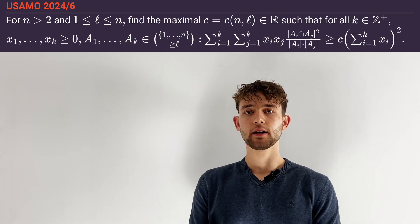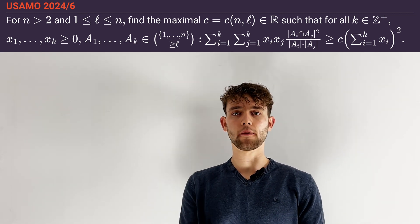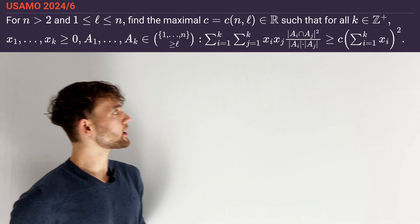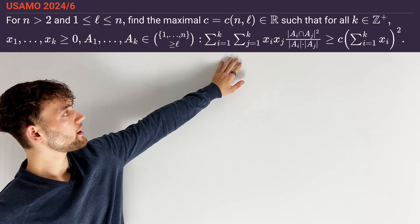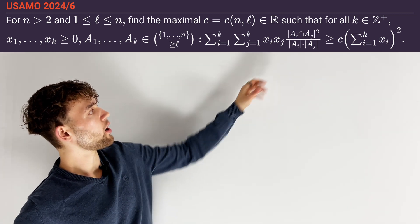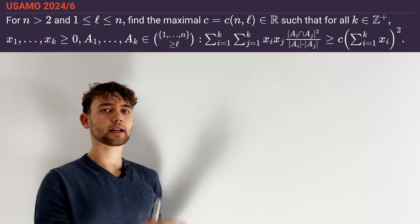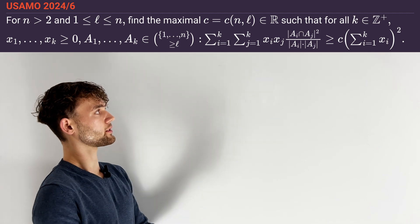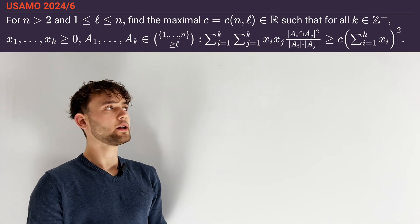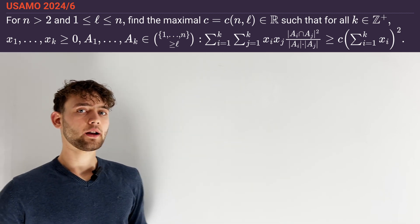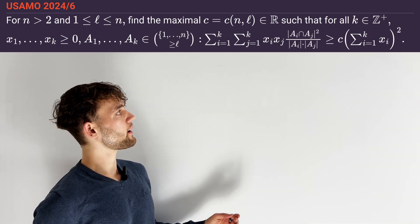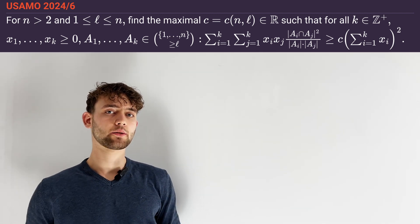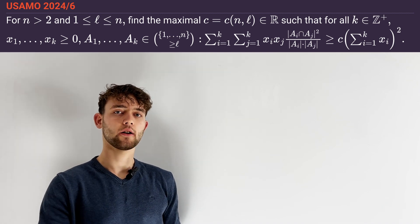We have subsets A₁ up to Ak of {1, …, n}, each having size at least l. We consider the inequality that the sum over all i and j of xᵢxⱼ times |Aᵢ ∩ Aⱼ|² divided by |Aᵢ| times |Aⱼ| should be greater than or equal to c times the sum of all xᵢ, all squared. We shall find the largest possible constant c depending on n and l such that this inequality always holds for any choice of k, the xᵢ, and Aᵢ.